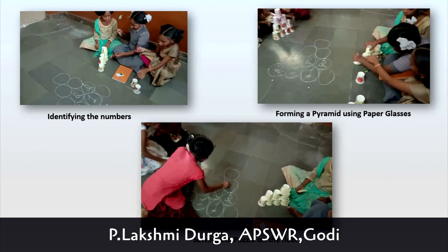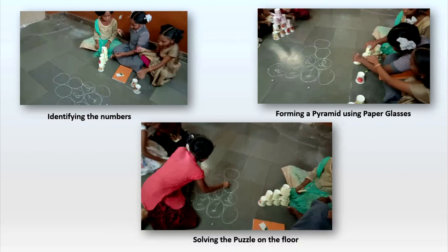Here are the images of this activity, as I have discussed till now. They have to identify the numbers on the paper glasses. Then, by using those, they need to form a pyramid. Who will form the pyramid first using paper glasses? They will get the chance to fill the puzzle on the floor.